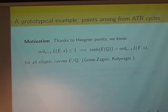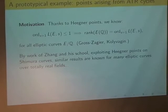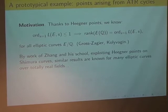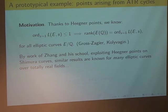Thanks to work of Zhang and his school, we also know that similar results hold for many elliptic curves over totally real fields, exploiting Heegner points on Shimura curves attached to quaternion algebras over totally real fields. These results are known for many elliptic curves over totally real fields, but not for all of them.